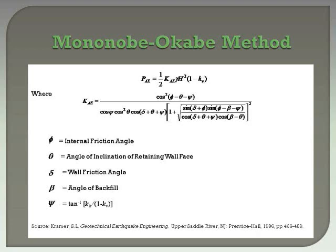The first method is the Mononobe-Okabe method, which is an extension of the Coulomb theory for active and passive pressures. This method has been around for many years. The Mononobe-Okabe method determines the total thrust — that is, the static plus dynamic thrust — acting on the cantilevered retaining wall. The resultant force acts at a distance of H over 3 above the base. However, the static thrust can be subtracted out to accommodate applying the dynamic thrust at a different height.